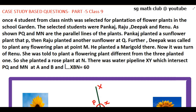Four students from class 9 were selected for plantation of flower plants in the school garden. The selected students were Pankaj, Raju, Deepak, and Renu. As shown, PQ and MN are parallel lines of the plants. Pankaj planted a sunflower plant at P, Raju planted another sunflower plant at Q, Deepak was asked to plant any flowering plant at point M and he planted a marigold there. Then it was Renu's turn — she was told to plant a flowering plant different from the other three, so she planted a rose plant at N.